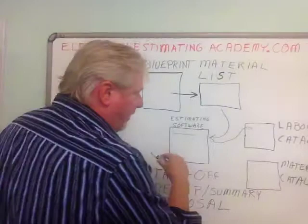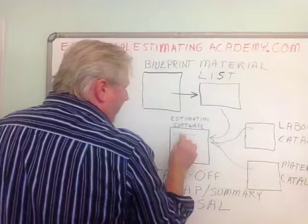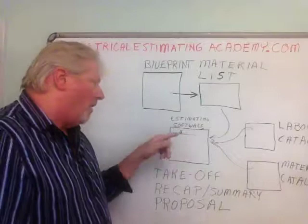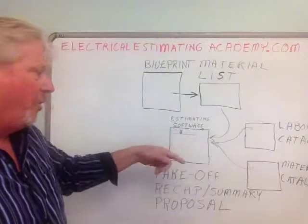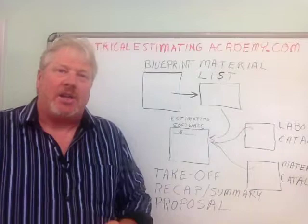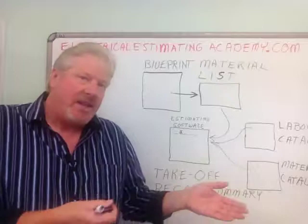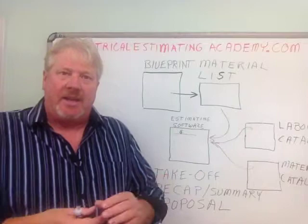At the same time it goes to the material catalog, finds that 20 amp receptacle and puts in a price for the receptacle. So it pulls the labor from the labor catalog to install the receptacle, and the material price to price the material. In today's world, this is all done electronically — they go to some pricing service and pull thousands and thousands of items and update the pricing. That's the way it works.